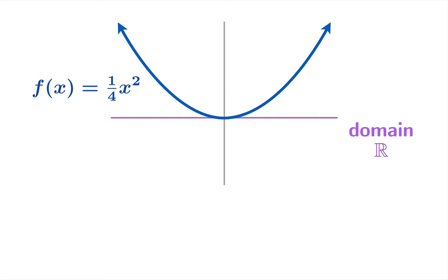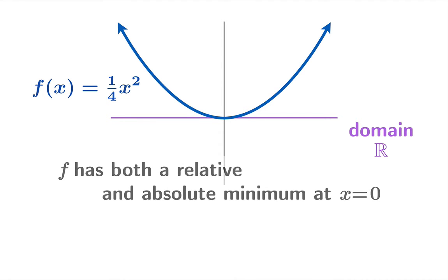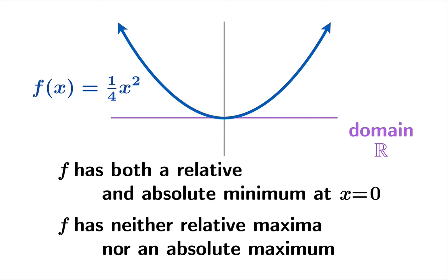How about the quadratic function (1/4)x²? The domain is all real numbers. f has both a relative and absolute minimum at x = 0, but f has neither relative maxima nor an absolute maximum.